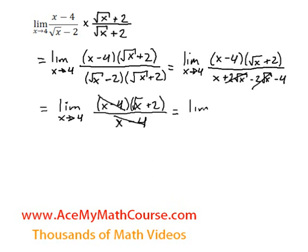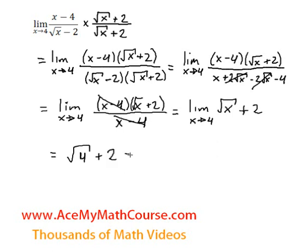And look at this. Now we have the limit as x approaches 4 of the square root of x plus 2. Because we no longer have a denominator, we can just plug in the 4 for x and get rid of the limit altogether. So that's the square root of 4 plus 2. And the square root of 4, of course, is just 2. 2 plus 2 is 4. So that is the limit as x approaches 4 of this expression, and that's how we find the limit through rationalizing.